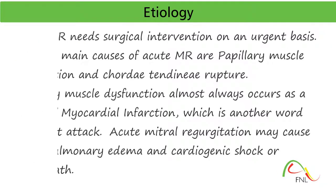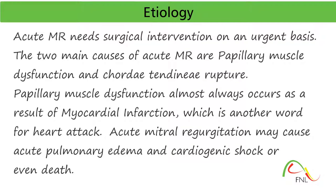The two main causes of acute mitral regurgitation are papillary muscle dysfunction and chordae tendinae rupture. Papillary muscle dysfunction almost always occurs as a result of myocardial infarction, which is another word for heart attack. Acute mitral regurgitation may cause acute pulmonary edema, cardiogenic shock, or even death.